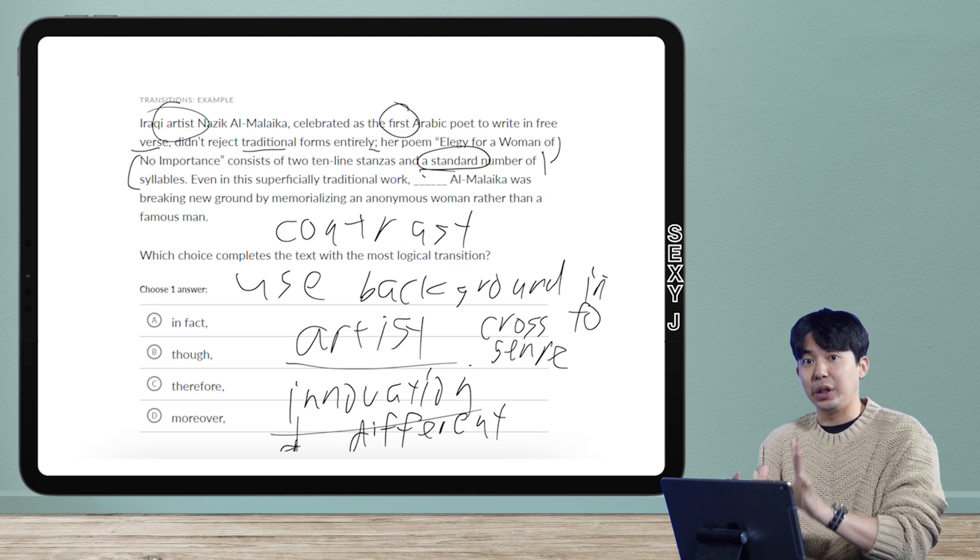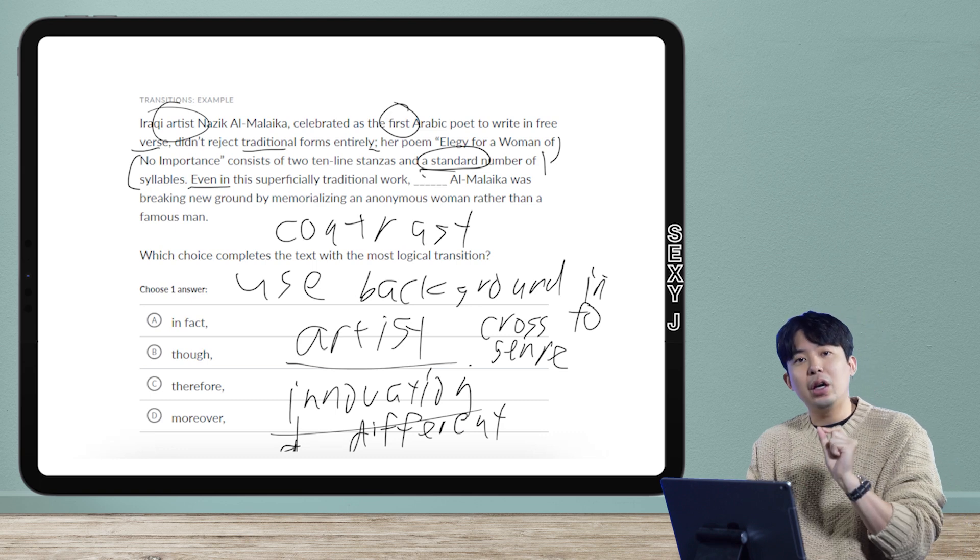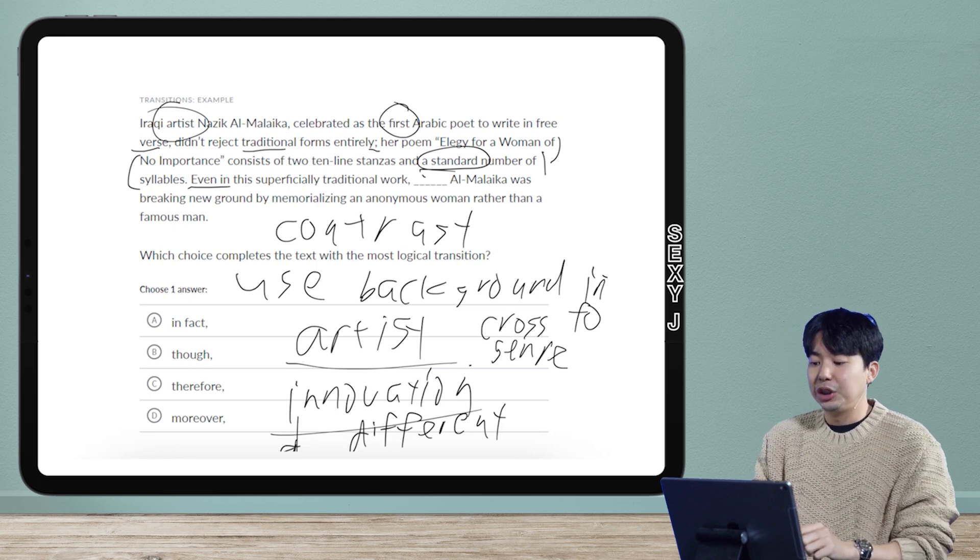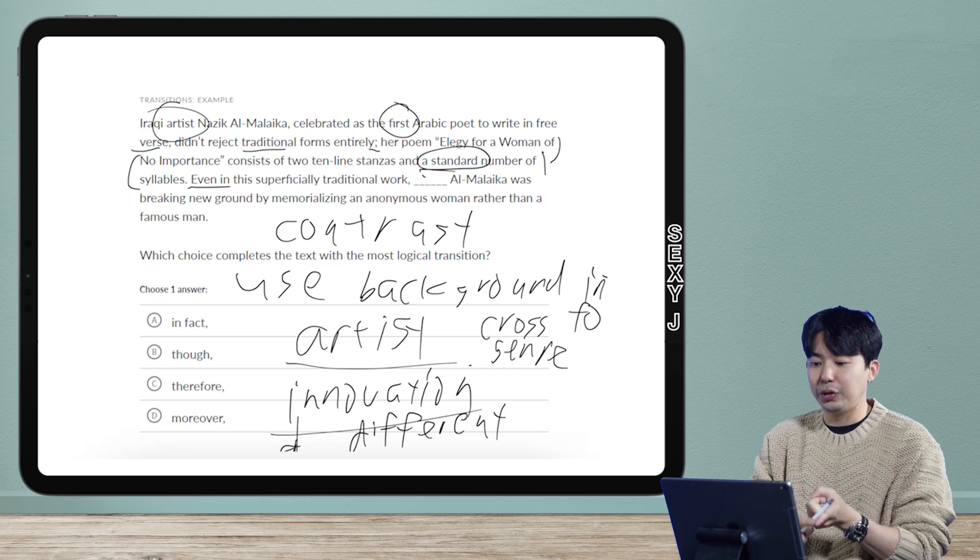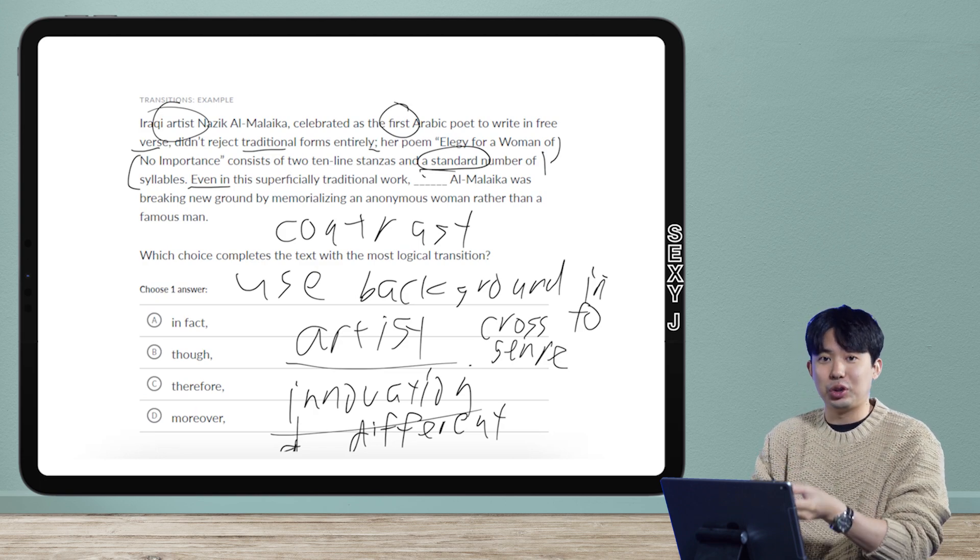This is where I think a lot of students didn't catch something. We have the word 'even' that already lets me know this should be a contrast. She was the first one to do things so she does it differently, however she does do tradition, however she is not all the way traditional.